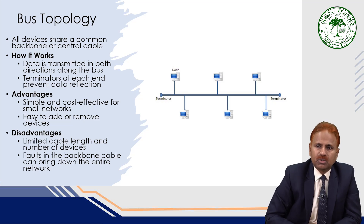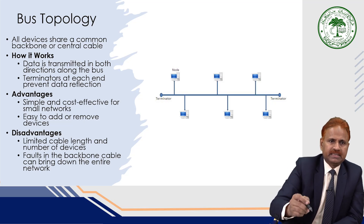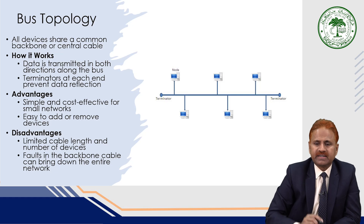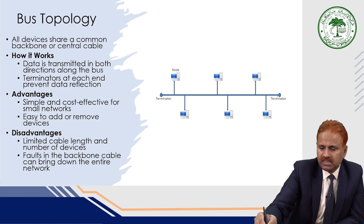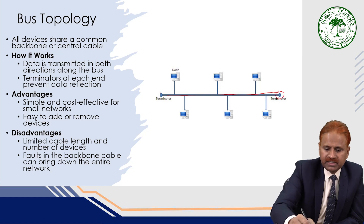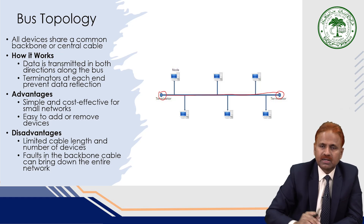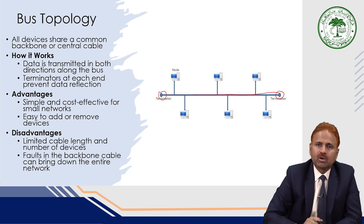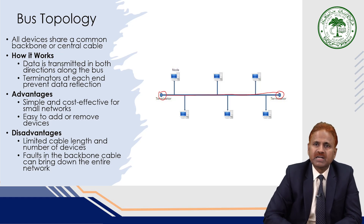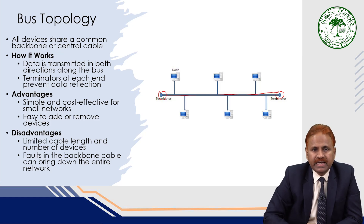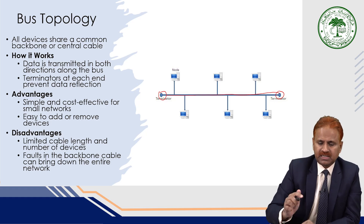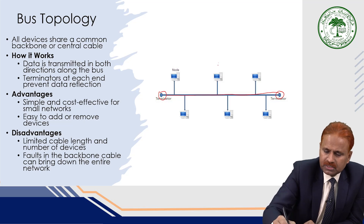Now we will look at bus topology. In bus topology, all devices share a common backbone or central cable. At both ends of the cable, we have terminators. All the devices are connected to this central cable or backbone. Data is transmitted in both directions along the bus, and the terminators at each end prevent data reflection.